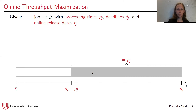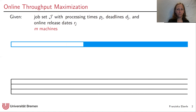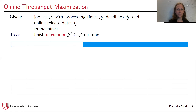Furthermore, we are also given a set of machines, m of them, and they are parallel and identical. The task is to select a subset of jobs such that we can guarantee all jobs complete on time and such that the cardinality of this set is maximized. Let's have a look at how this example unfolds.